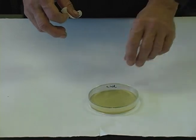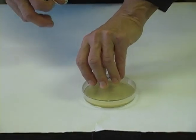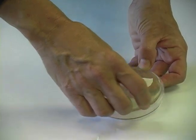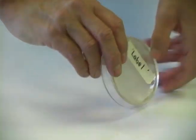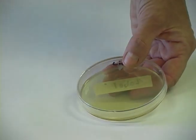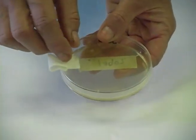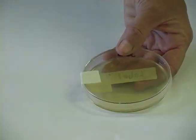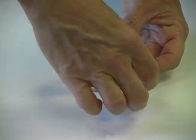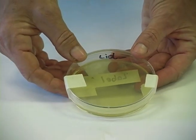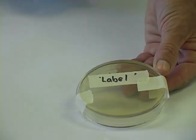Labels are always placed on the bottom of the agar plate. Before incubation, agar plates should always be taped shut. And when we incubate our agar plates, we always invert them or turn them upside down so the label is pointing upwards.